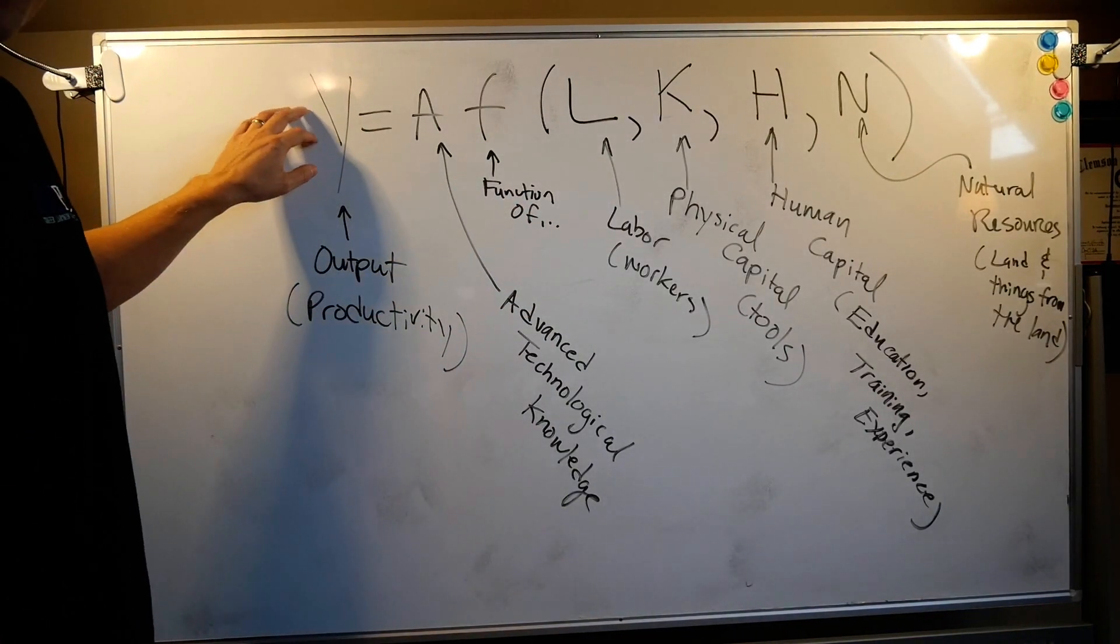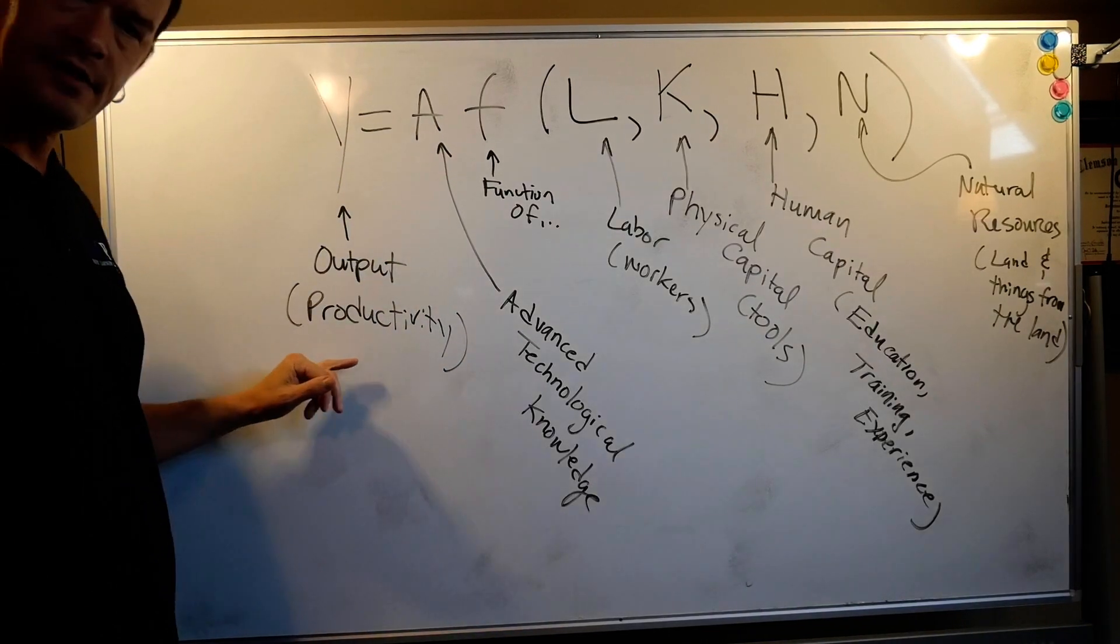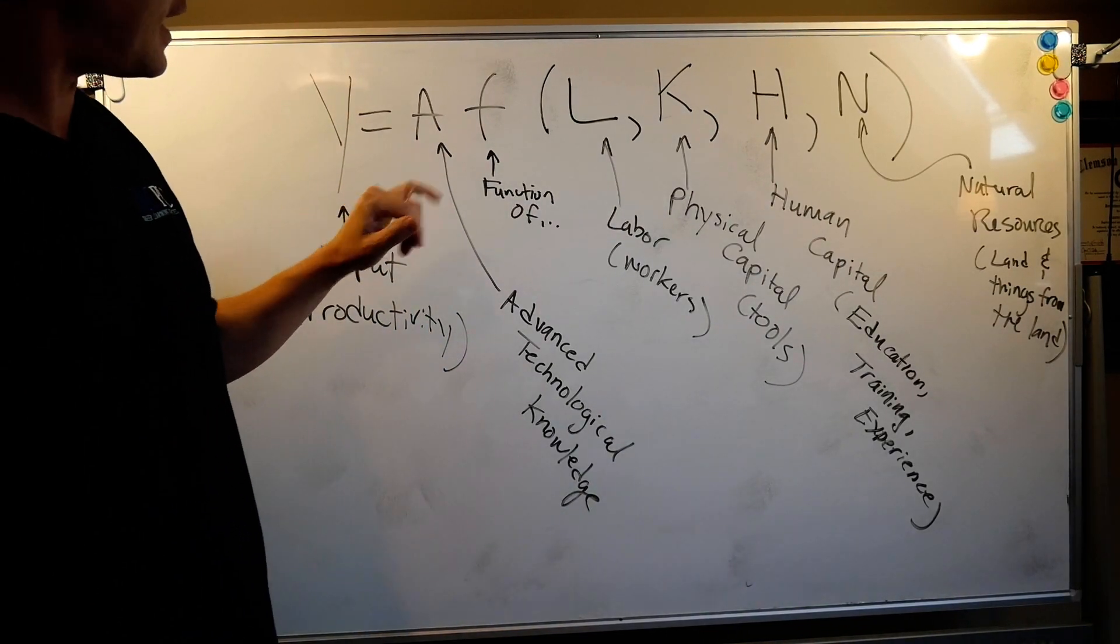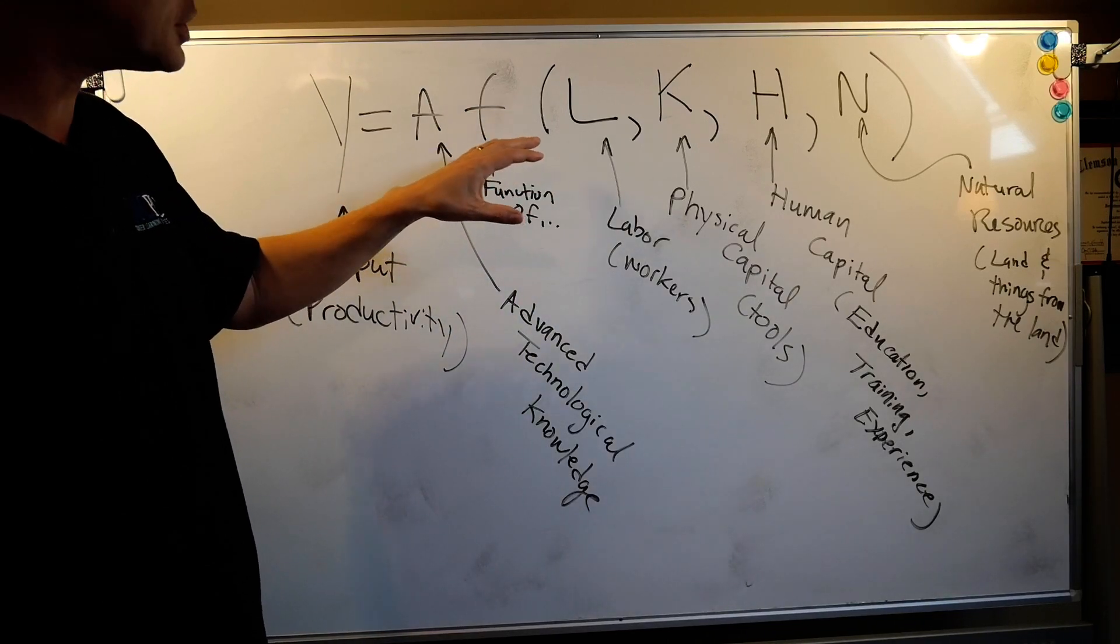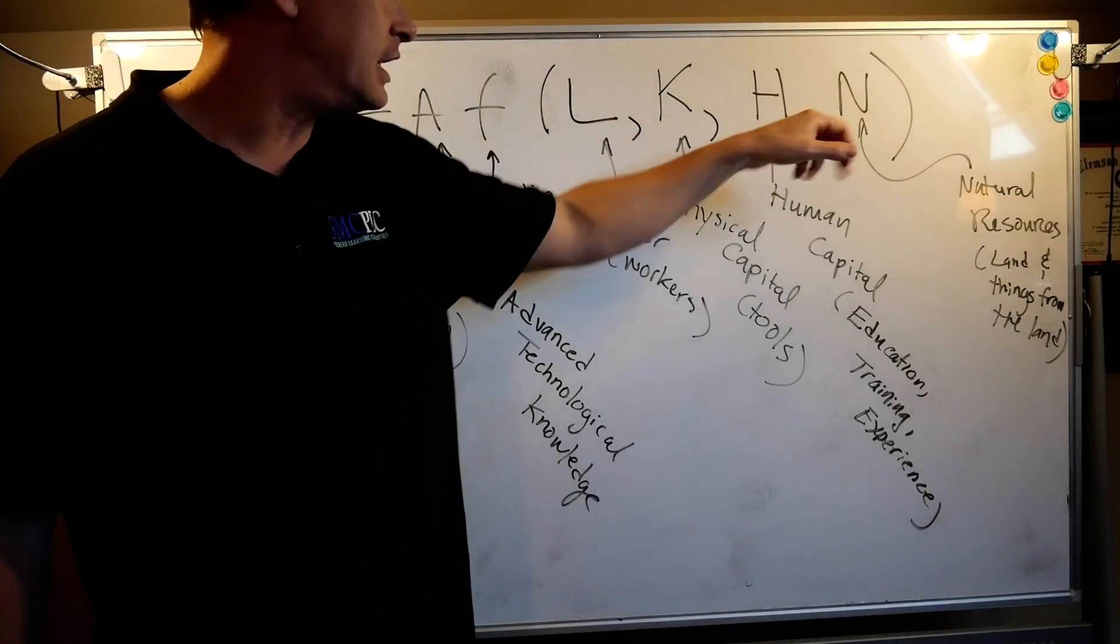Output, this is a production function. Output Y, that's output, that's your productivity, is a function - I'm going to come back to A - so a function of, mathematically, a function of L, K, H, and N. Well, what is that?